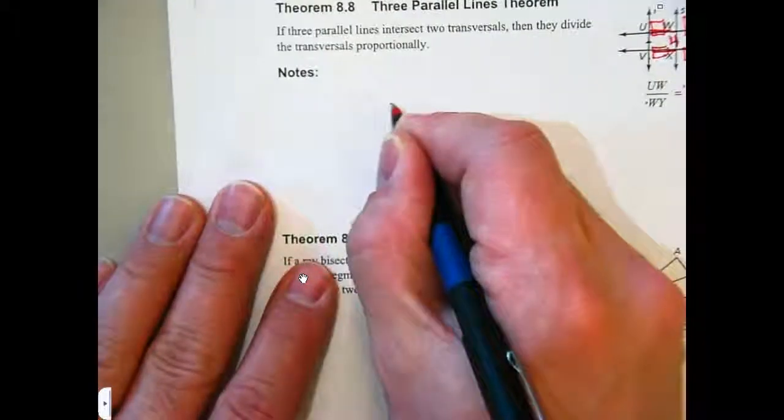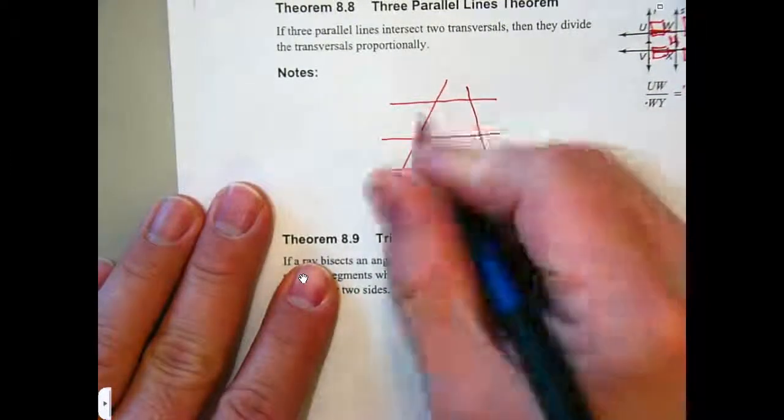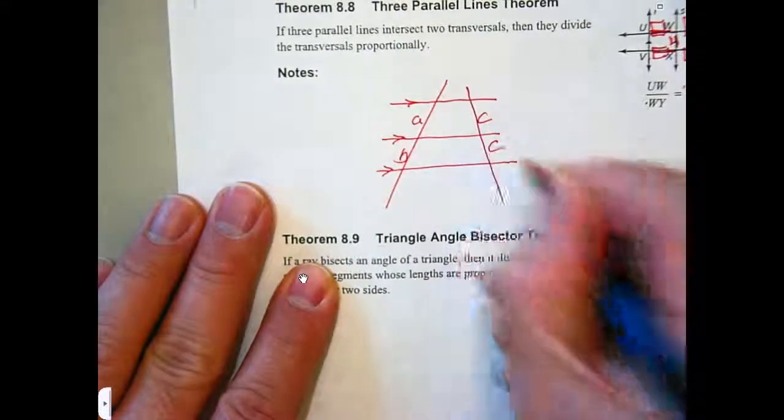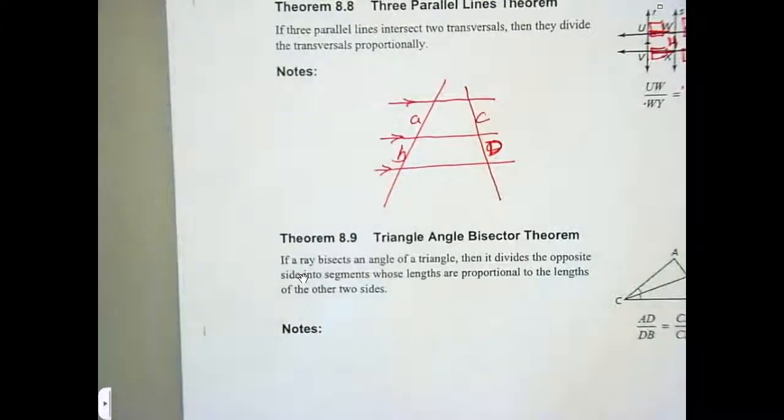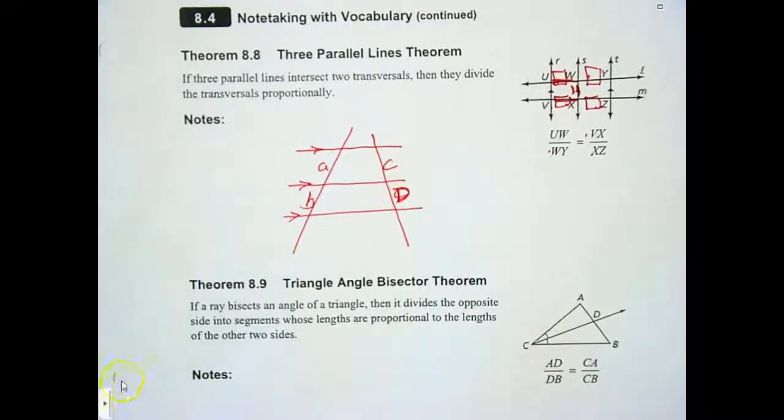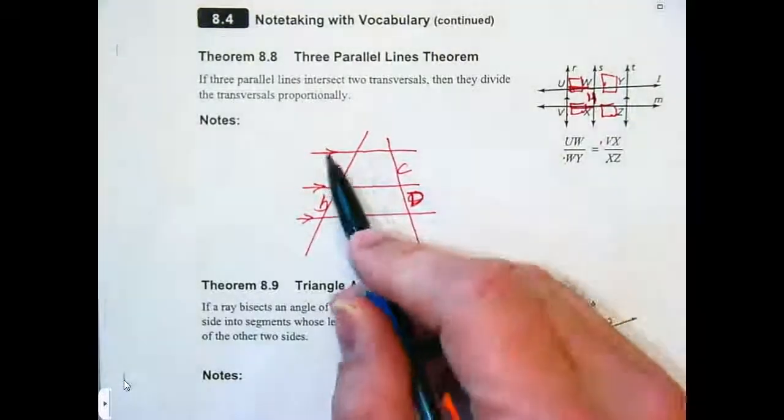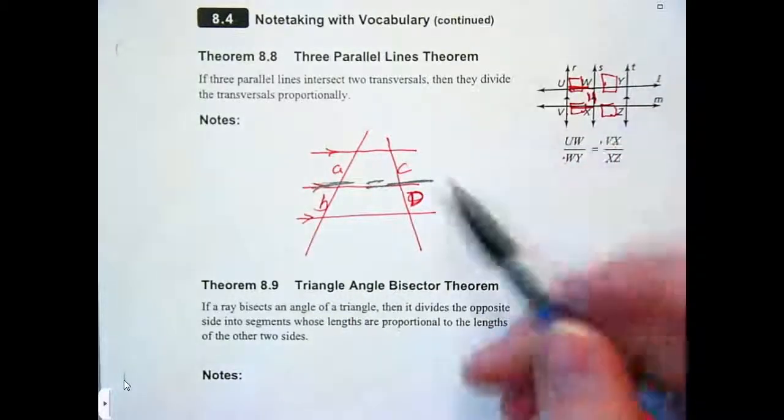So that is to that as that is to that. There are other ways we can write this one as well, but really that's what they're saying. If you can think of, like if I gave you parallel lines in this format, and some transversals, and I labeled that A, and that B, and that C, and that D, I want you to write your proportion from that.